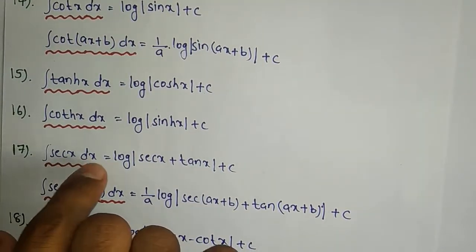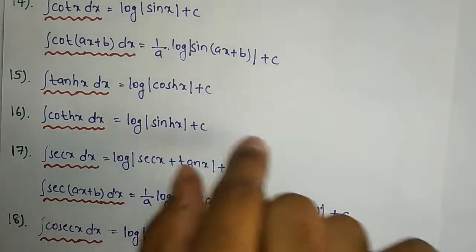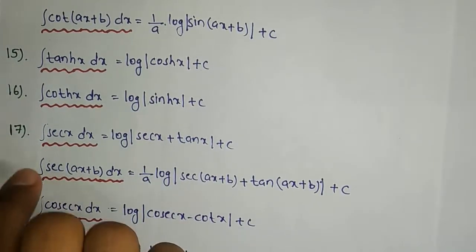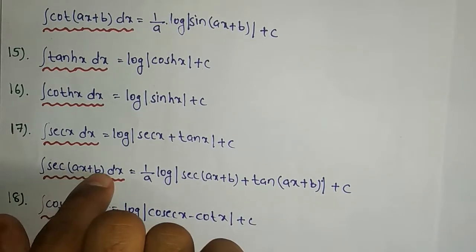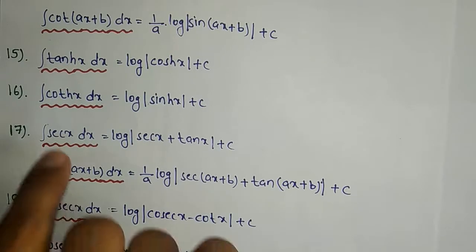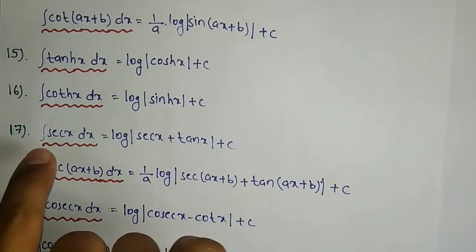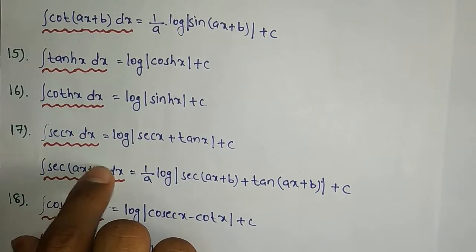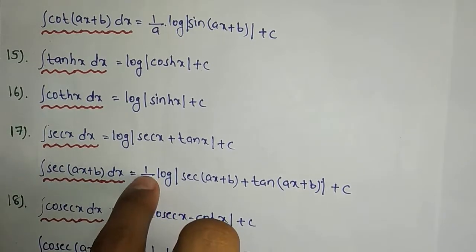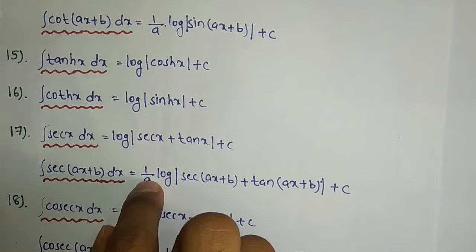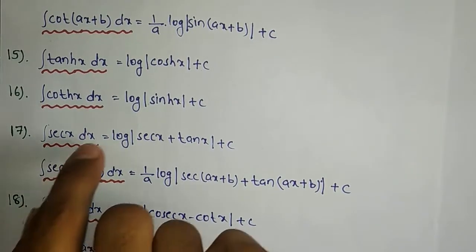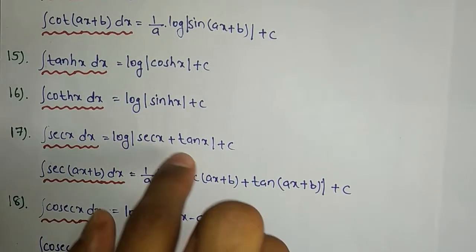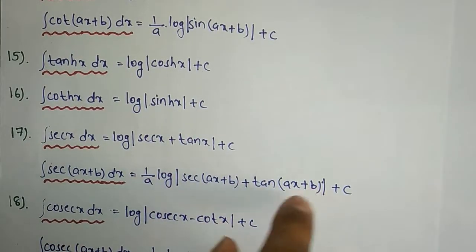The 17th formula: integration of secx dx equals log|secx + tanx| plus C. For sec(ax+b), the inner derivation gives a, so integration of sec(ax+b) dx equals 1/a · log|sec(ax+b) + tan(ax+b)| plus C.